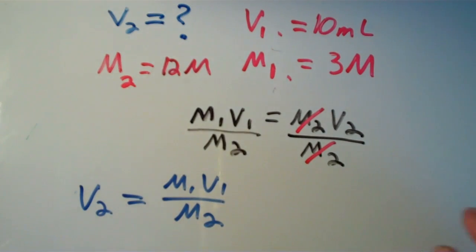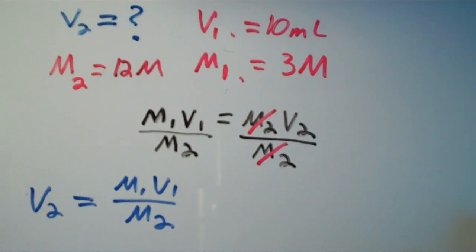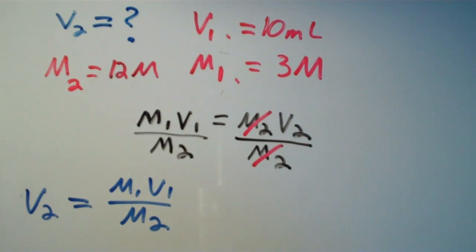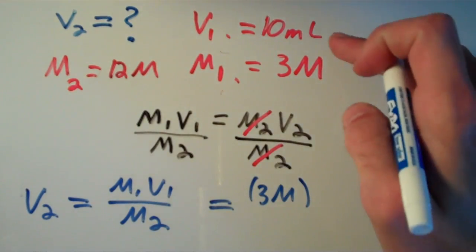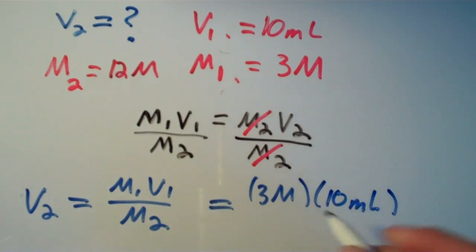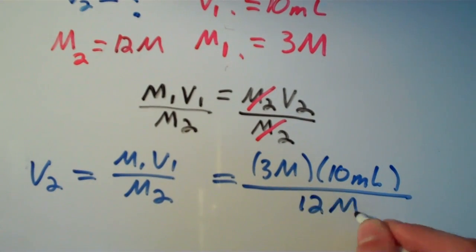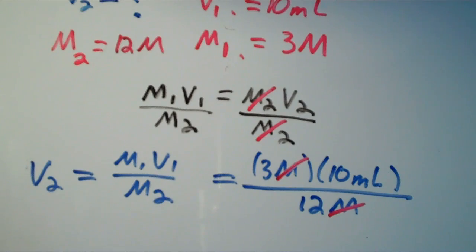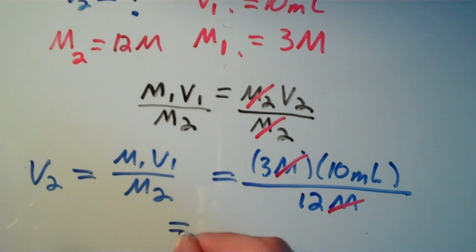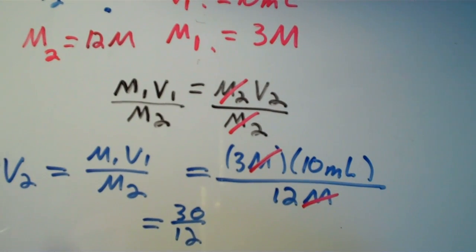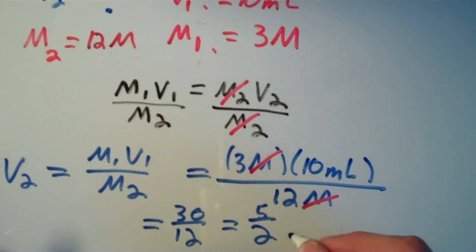So the algebra to get to the final result isn't really that bad. At this point, all we have to do is just plug in our numbers, and we're good to go. So M1 is 3 molar, V1 is 10 milliliters, M2 is 12 molar. Molar here cancels with molar here, and so we have nothing but 3 times 10 over 12, which is 30 over 12. You can actually reduce this by dividing the top and the bottom of the fraction by 6, and you end up getting 5 halves.